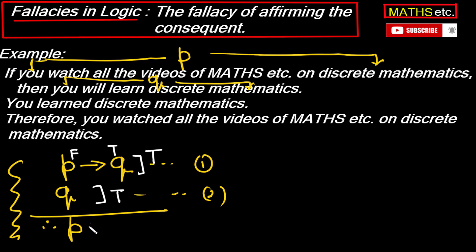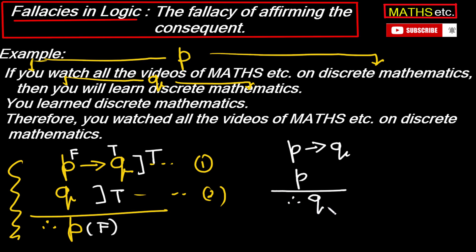So in that case, the conclusion (P) becomes false. Q being true does not necessarily mean the antecedent is also true. This is a fallacy, because we think we are using a rule we know — P implies Q, Q therefore P — but the actual rule of modus ponens has P as the second premise, not Q. So our reasoning contains a fallacy, it is misleading, and this argument is an invalid argument.